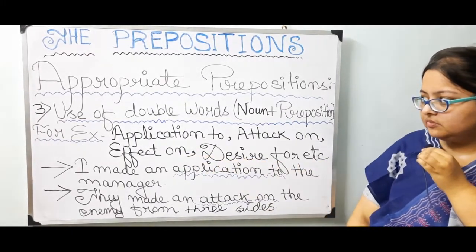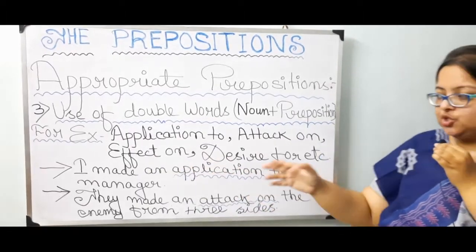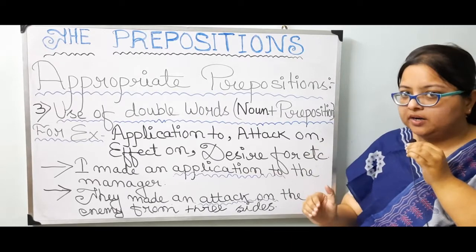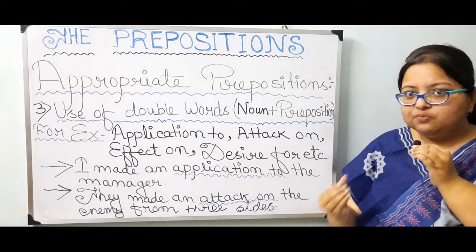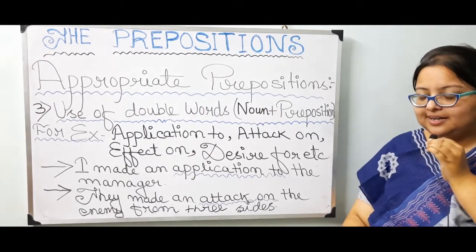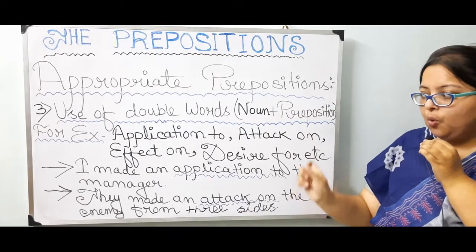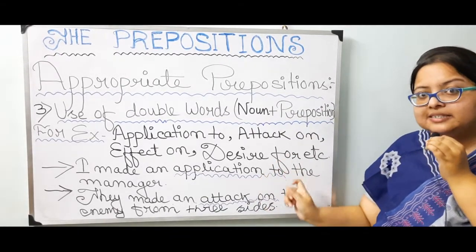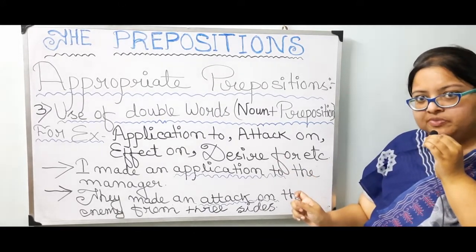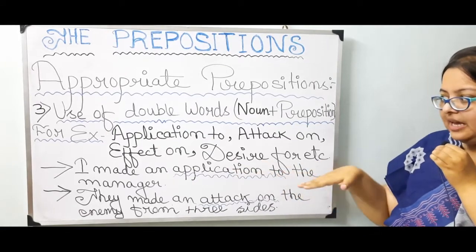First example: I made an application to the manager. After 'application', 'to' is the more suitable and appropriate one — it cannot be replaced. According to the sentence you have to decide, but since we are talking about appropriate prepositions, after 'application', 'to' is the most suitable one that is generally kept. So: I made an application to the manager.